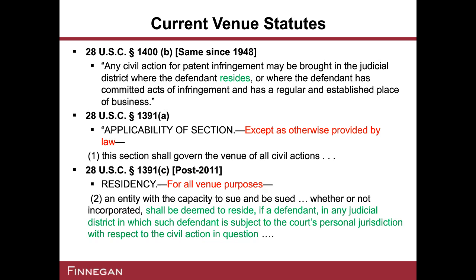We've mentioned the 1400B statute, shown in slide six. This is the patent venue statute that has remained unchanged since 1948, and it sets forth two prongs for determining proper venue. The first prong says any civil action for patent infringement may be brought in the judicial district where the defendant resides. The second prong says where the defendant has committed acts of infringement and has a regular and established place of business. That second prong has two requirements: where the acts of infringement occur, and where there is a regular and established place of business.